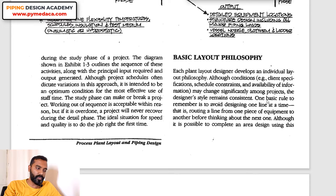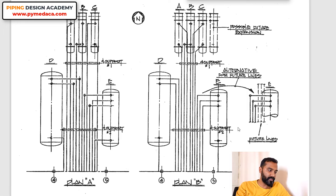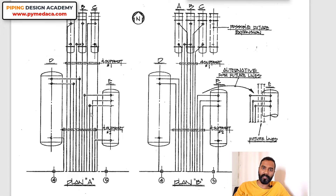One basic rule to remember is to avoid designing one line at a time. The book doesn't recommend designing one line at a time because you are working for a full plant. See this picture — if you focus on one particular line and finalize its routing, you may not find space for other lines. When planning, you have to plan in a group. That is what the book says.